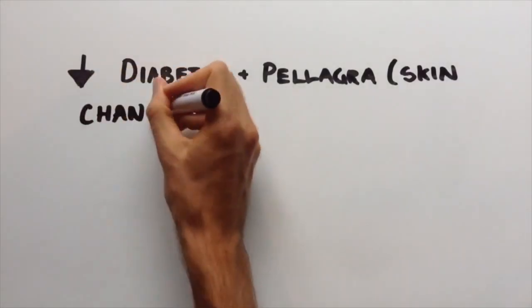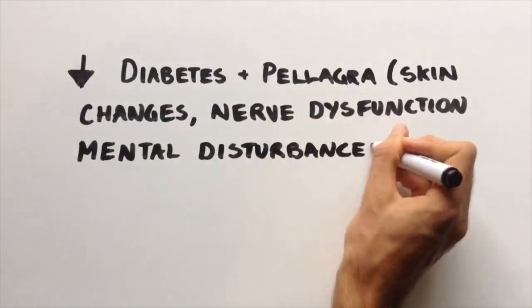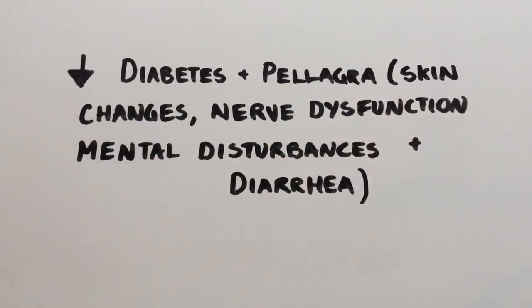Pellagra is characterised by skin changes, nerve dysfunction, mental disturbances and diarrhoea.